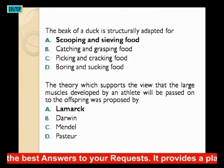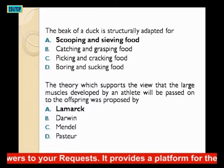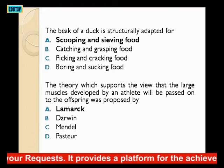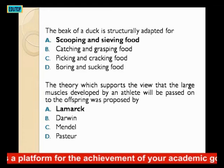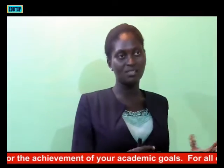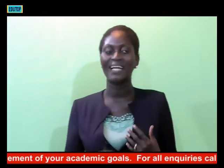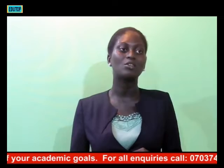The theory which supports the view that the large muscles developed by an athlete will be passed on to the offspring was proposed by — A: Lamarck; B: Darwin; C: Mendel; D: Pasteur. This relates to the theory of use and disuse — when a body part is used it develops, and according to Lamarck it should be passed to the offspring. So the answer is A: Lamarck.